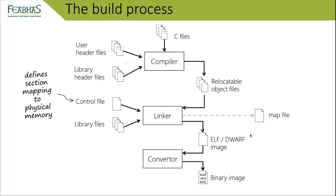Once we have all our .o files, we go through a linker stage. Compilation can be done in parallel; the link stage is generally serial and is the slowest part of the build. We have our set of object files, library files in archive (.a) format. What differs in deeply embedded applications from host applications is a specific linker control file, sometimes called a linker script, which tells the linker about the physical memory system — the absolute addresses and sizes of flash and RAM.